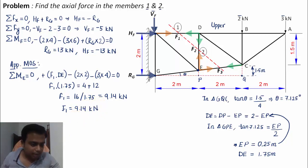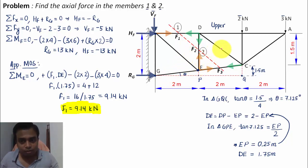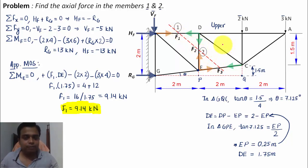F1 equals 16 divided by 1.75, which equals 9.14 kN. So the value of F1 computed is 9.14 kN. Now we took the moment about point E, which was below the section, so forces above the section were considered. Next, we'll consider the upper portion of the section and frame the Fx equals 0 and Fy equals 0 equations.